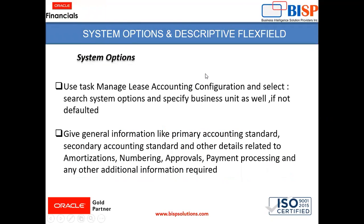First, system options. We can use the task Manage Lease Accounting Configuration for setting system options. We need to go to that task, select Search System Option, specify our business unit if not defaulted, and then set up system options. In system options we need to give general information like primary accounting standard, secondary accounting standard, and other details related to amortization, numbering, approvals, and payment processing.